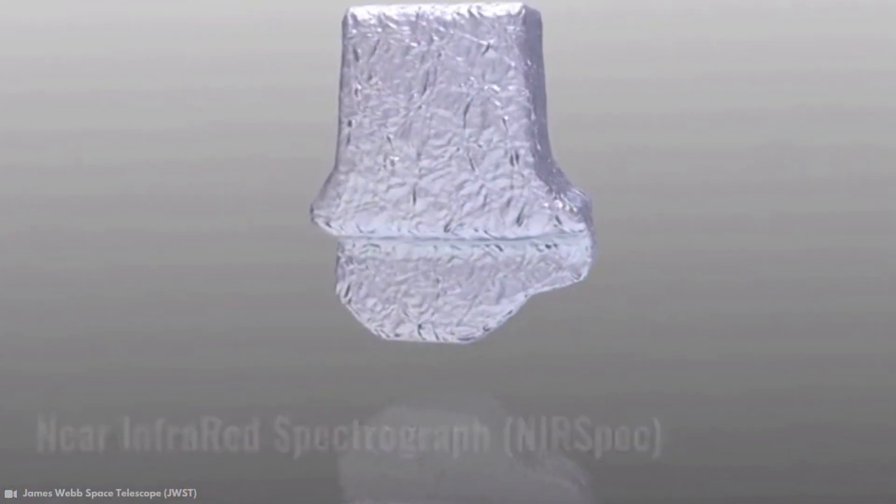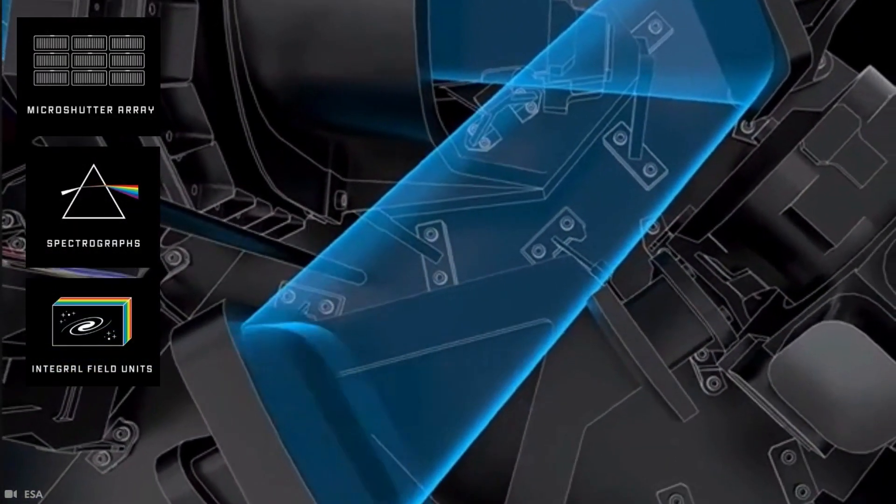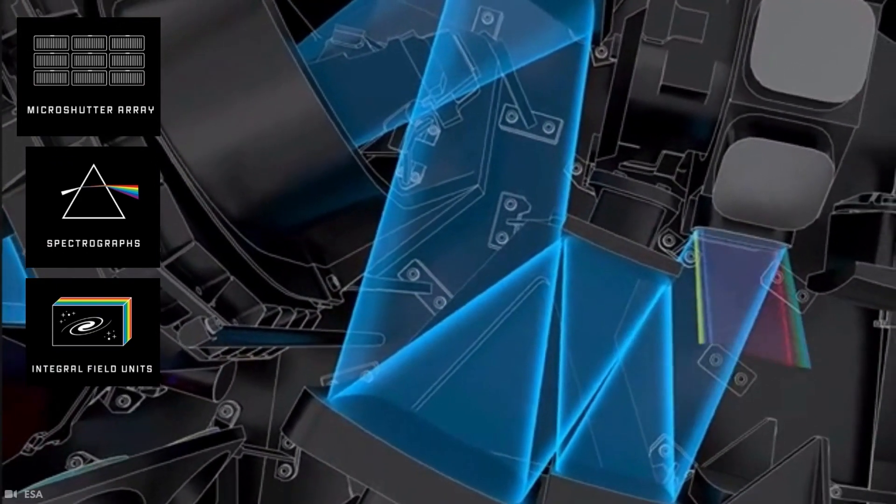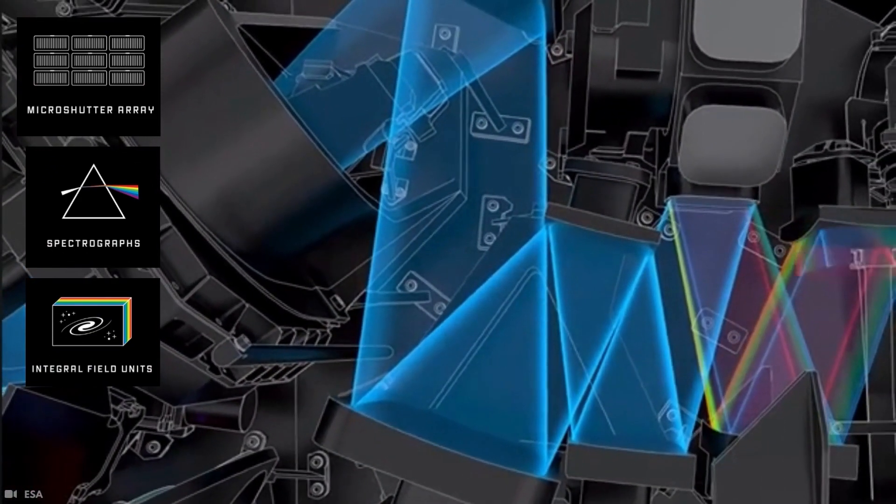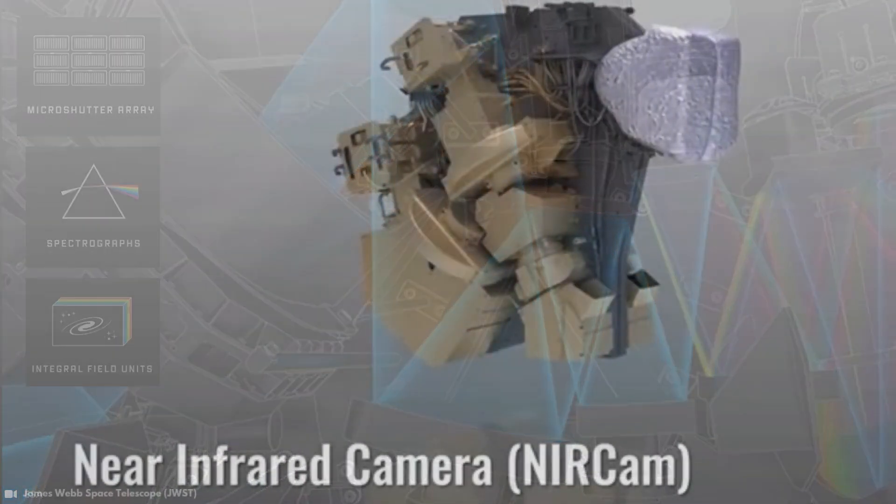The second instrument is the near-infrared spectrograph. This instrument is a special spectrograph capable of capturing 100 spectra simultaneously with the micro-shutter array. It can take spectroscopy for many objects at the same time.